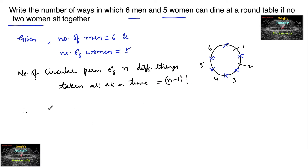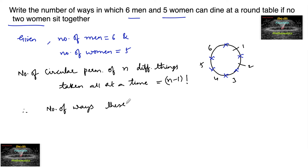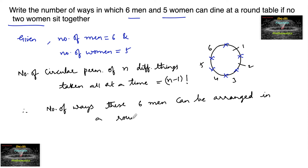So the number of ways these six men can be arranged in a round table is equal to (6 minus 1) factorial, which is 5 factorial.